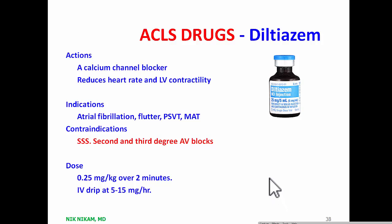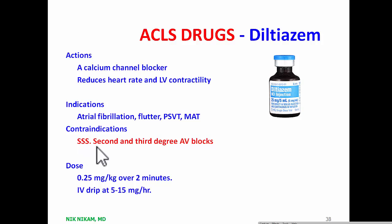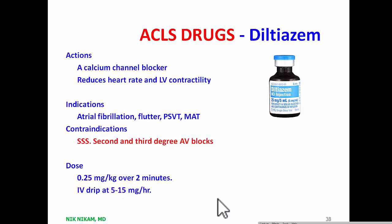Diltiazem is a calcium channel blocker — another drug in this category is verapamil — used for rate control. Diltiazem has been found useful in managing left ventricular rate in patients with atrial fibrillation, atrial flutter, supraventricular tachycardia, or multifocal atrial tachycardia. However, it is contraindicated in patients with sick sinus syndrome or second and third degree AV blocks. The usual dose is 0.5 mg/kg over two minutes — essentially one-quarter of the patient's weight in kilograms as milligrams — and it can also be given as a continuous IV drip at 5 to 15 mg/hour.